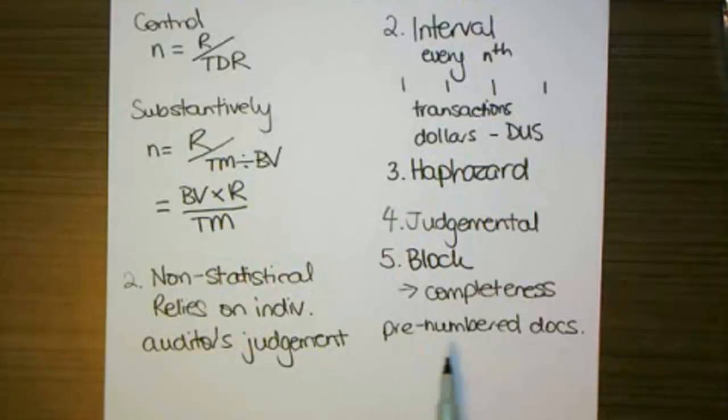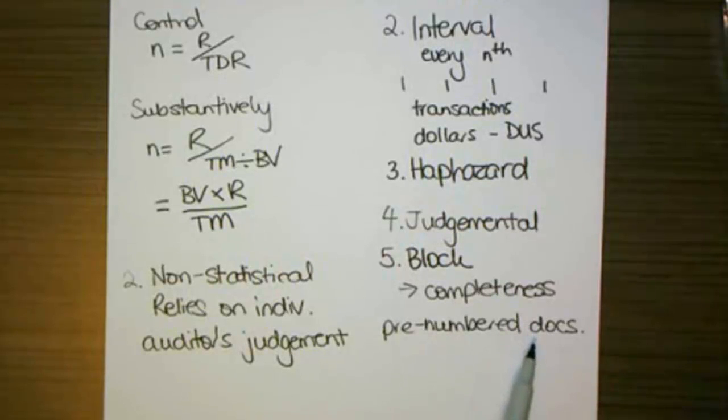So if I want to check that a batch of purchase orders is complete, that there are no purchase orders missing, then I would need to select a block of those purchase orders from one particular month or a couple of weeks of the year and then check the sequence of each individual transaction to make sure that there are no transactions missing.